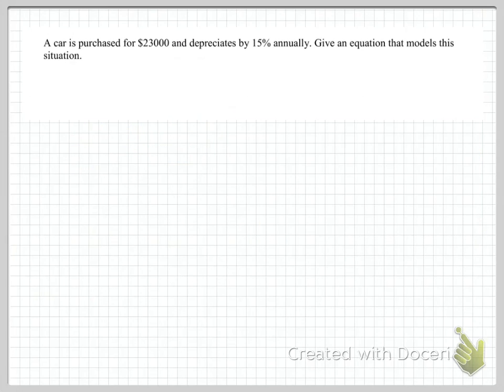The second example, again, similar to what we did in the finance section. We have a car purchased at $23,000. It's depreciating by 15%. We can use the formula that we've learned. Future value equals present value, and n is the number of years in this equation. R is, of course, the rate.